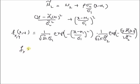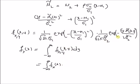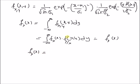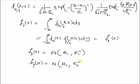The marginal PDF f_x(x) = integral from −∞ to +∞ of f(x,y) dy. This can be rewritten as f_x(x) times the integral of f(y|x) dy. Since f_x(x) is independent of y, and the integral of the conditional PDF f(y|x) over all y equals 1, we get f_x(x) = f_x(x). Therefore, the marginal PDF f_x(x) is a Gaussian PDF with mean μ₁ and variance σ₁². By a similar process, f_y(y) is also a Gaussian PDF with mean μ₂ and variance σ₂². Thanks for watching.